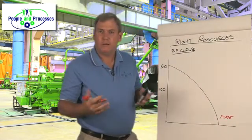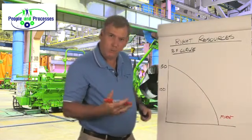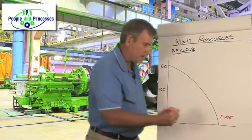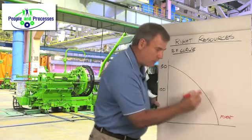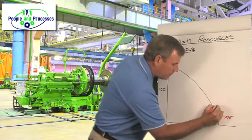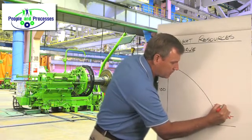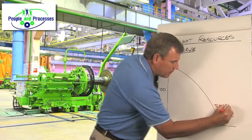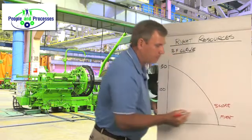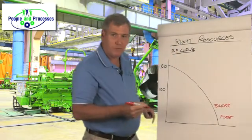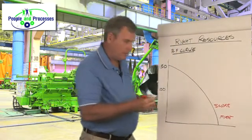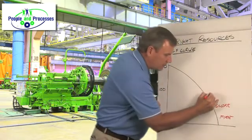Well, what's a good indicator of fire? What happens before that as we back up the curve? Well, we might have smoke. And before smoke, we might have heat.